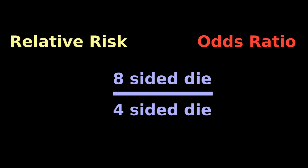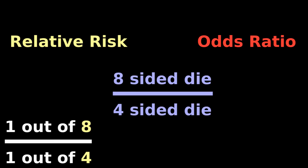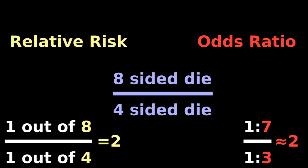Comparing an eight-sided die to a four-sided die: the relative risk of winning is 1 out of 8 compared to 1 out of 4 — twice the outcomes and a factor of 2. The odds ratio is 1 out of 7 compared to 1 out of 3 — twice the outcomes and a factor that approximates 2. So the odds ratio approximates relative risk when it's a rare event.